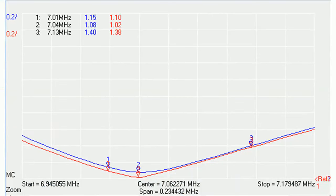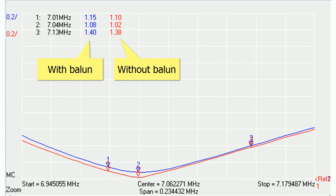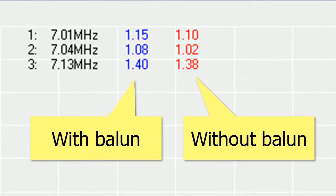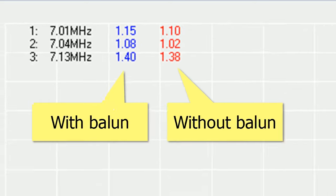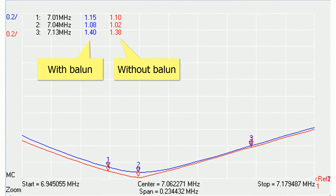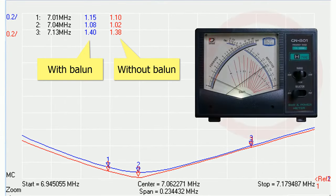The first test is the measurement of the VSWR. As we can see, the curves with balun or without balun are almost identical. There is no way to see the balun effect with the VSWR meter.